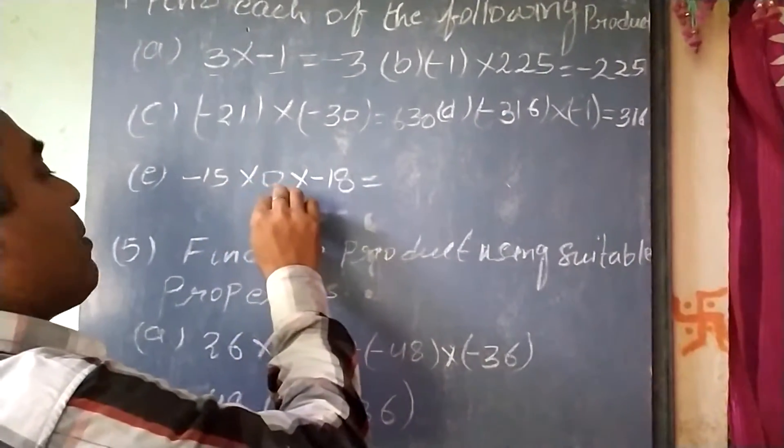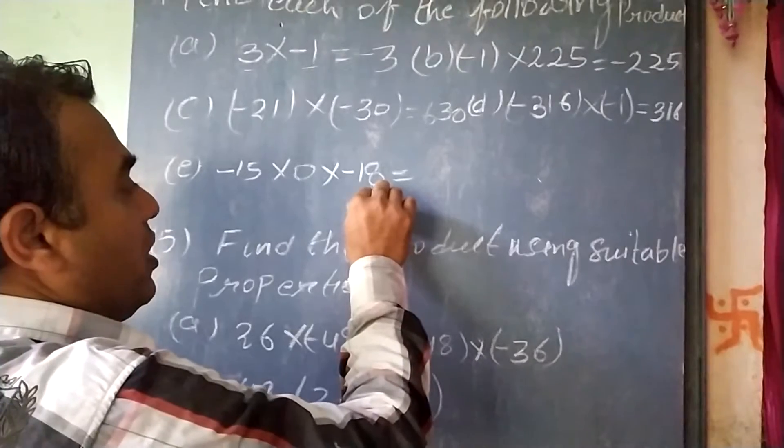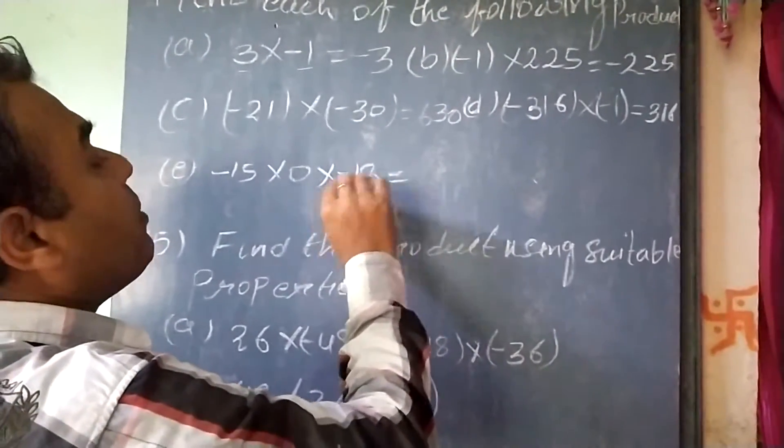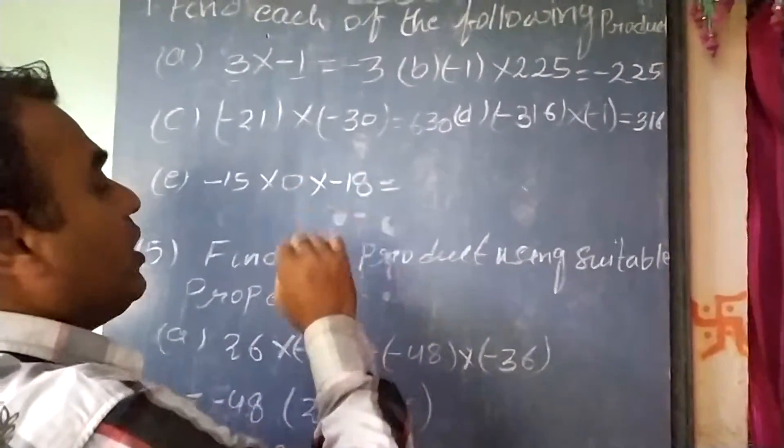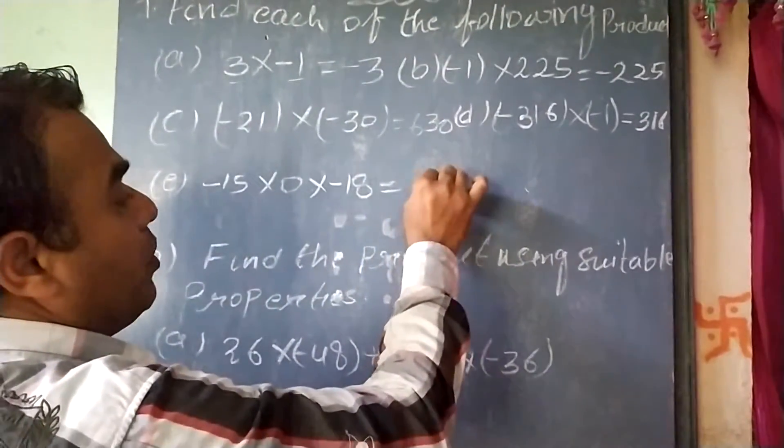Here, minus 15 multiplied by 0 multiplied by minus 18 will be 0, as any number multiplied by 0 and by any other number will give 0 as the product.